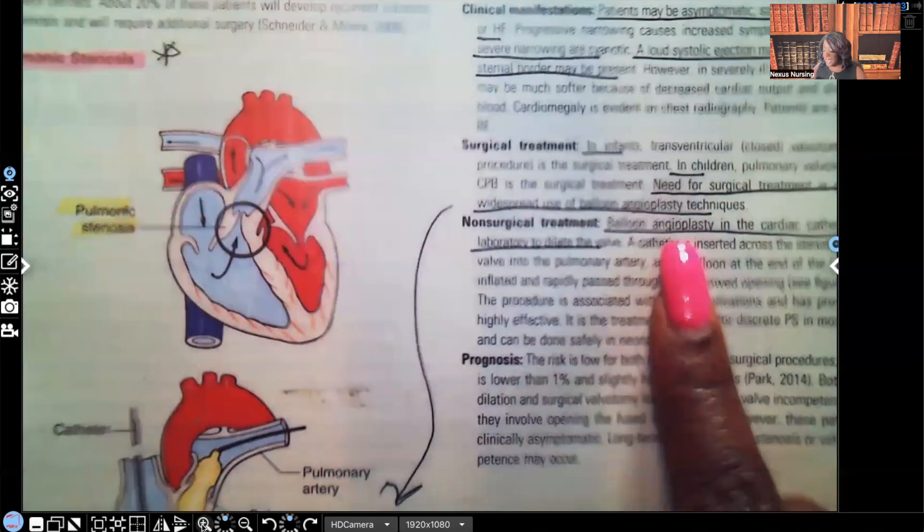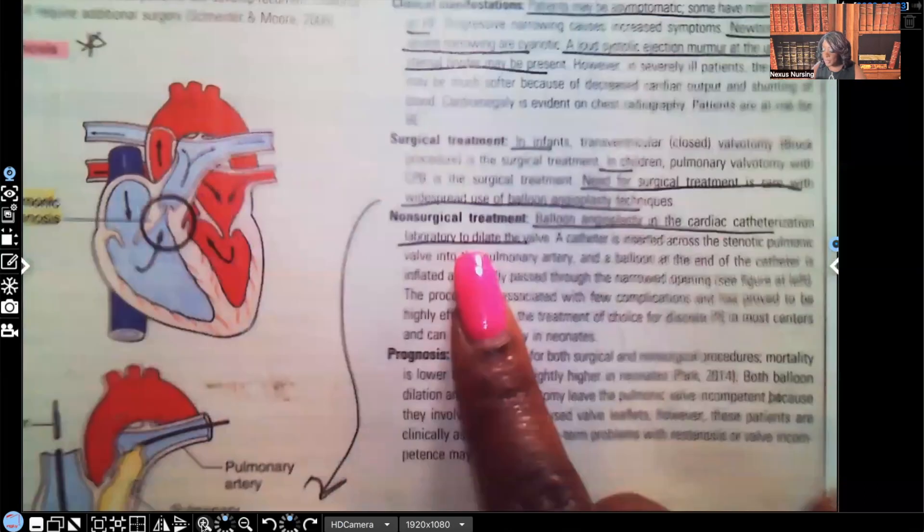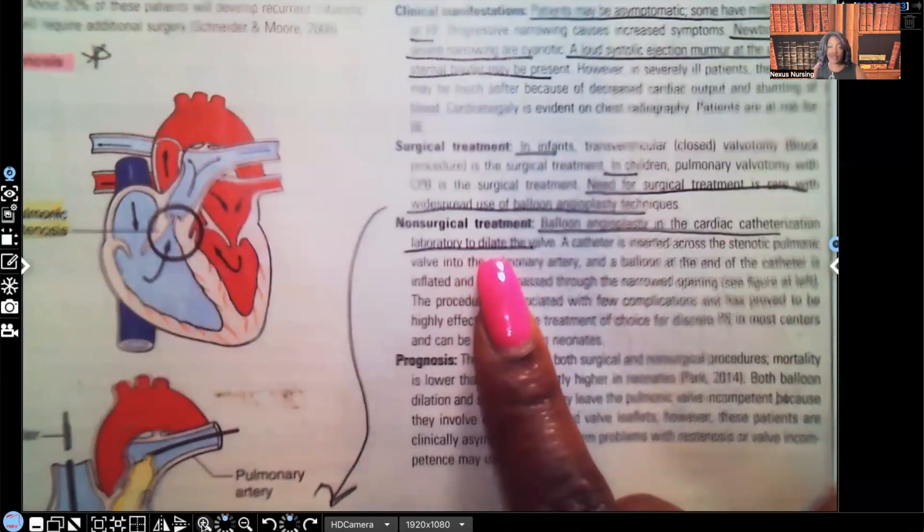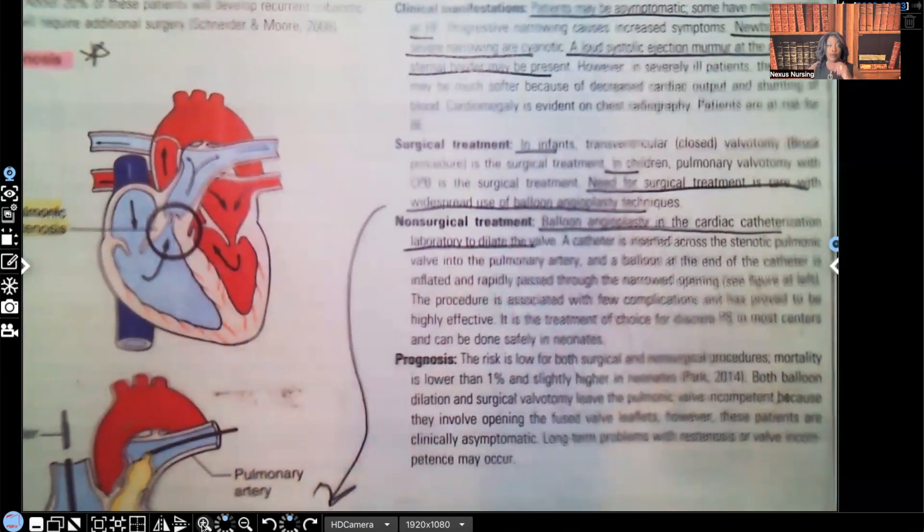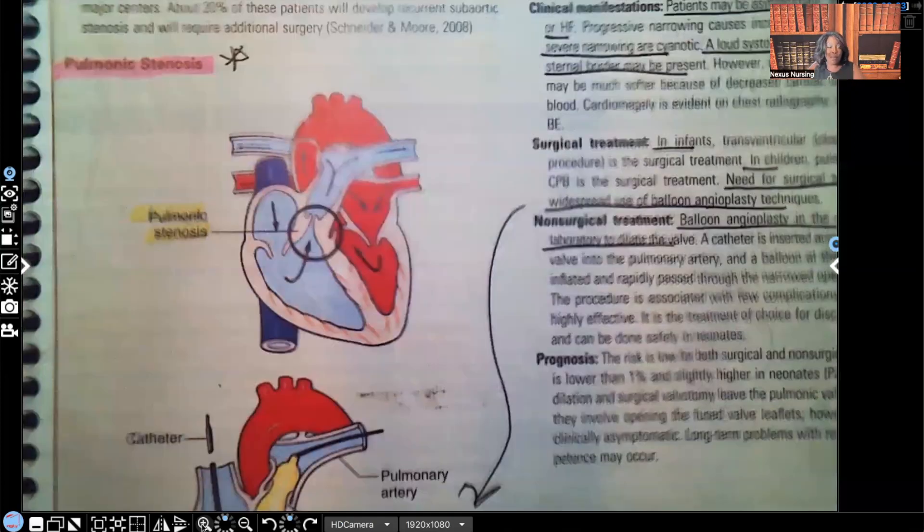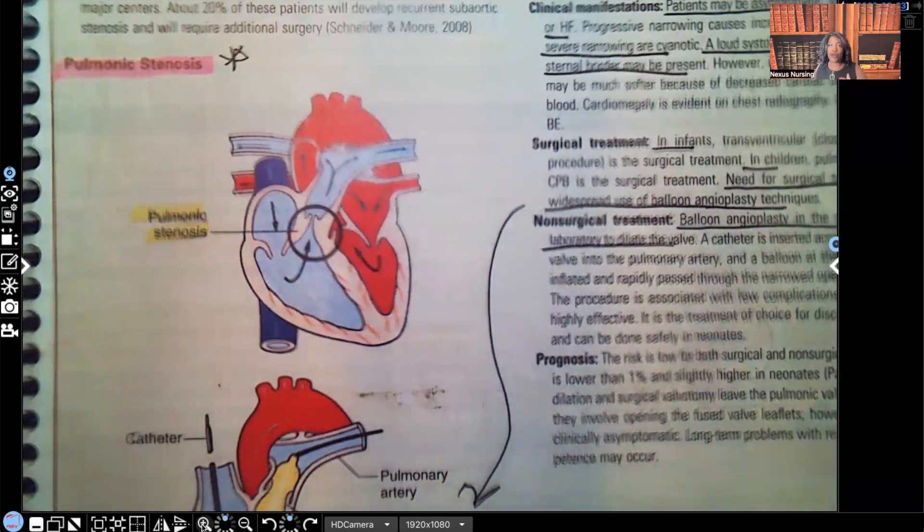Balloon angioplasty in the cardiac catheterization laboratory is done to dilate the valve. That's it—that's your pulmonic stenosis. I know when you see these cardiac congenital disorders you get nervous.